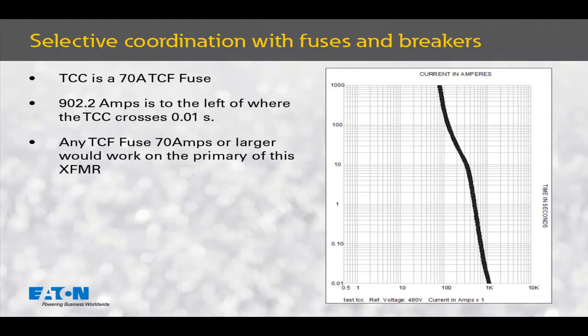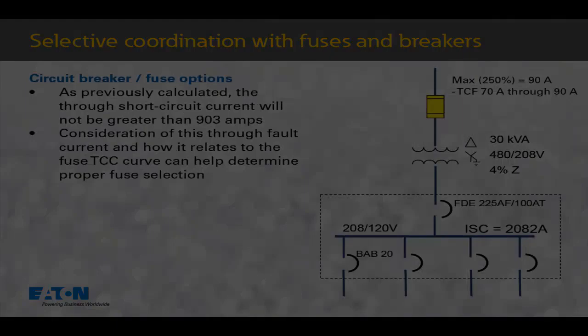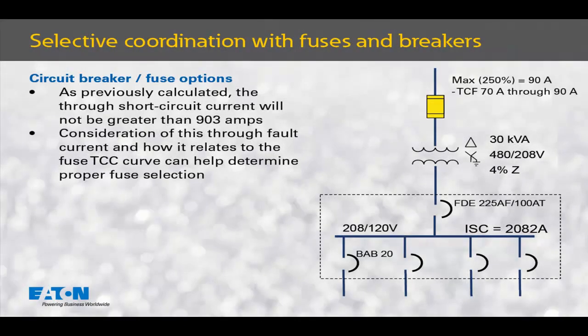Regardless of the circuit breaker solution that selectively coordinates on the secondary, the TCF 90 can be selected as this is the maximum size overcurrent protective device permitted by the National Electrical Code. The fuse solution on the primary of this transformer does provide some flexibility in moving to a smaller fuse for tighter protection below the maximum permitted by the NEC, should the engineers decide to do so. The only restriction outside of the maximum fuse size permitted by the NEC is the inrush current of the transformer.